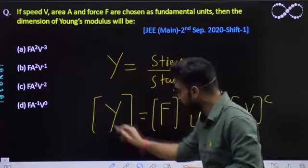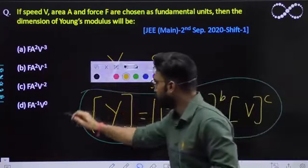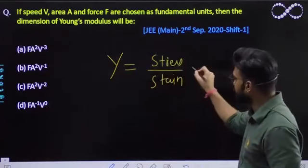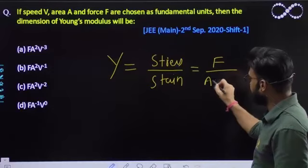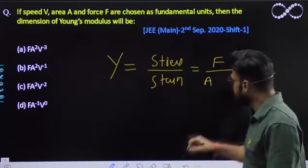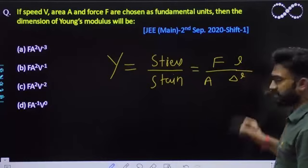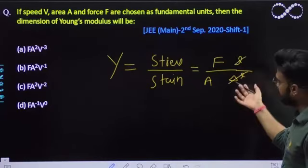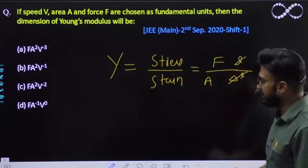Dekh lete hain hum jaldi se karne ka tareeka, kyunki this is JEE Main, so you can easily do the questions by applying your basic brain. Toh dekho stress kya hota hai? Force per unit area yehi hoga. And strain kya hoga? Change in length divided by original length. Change in length is delta L. Toh length se length toh cancel ho jaayega because length par dependent hai hi nahi. Toh only aapka parameter bacha force and area.